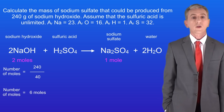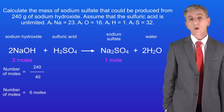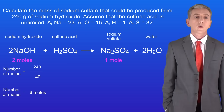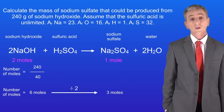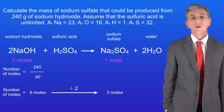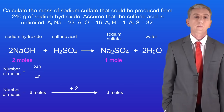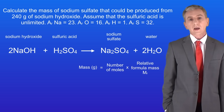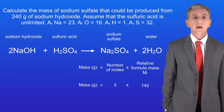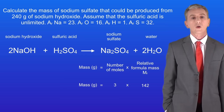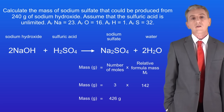As we've seen, 2 moles of sodium hydroxide make 1 mole of sodium sulfate, so we have to divide our number of moles by 2. So 6 moles of sodium hydroxide will make 3 moles of sodium sulfate. To calculate the mass, we multiply the number of moles by the relative formula mass. The relative formula mass of sodium sulfate is 142. So multiplying 3 moles by 142 gives us 426 grams, and that's our final answer.